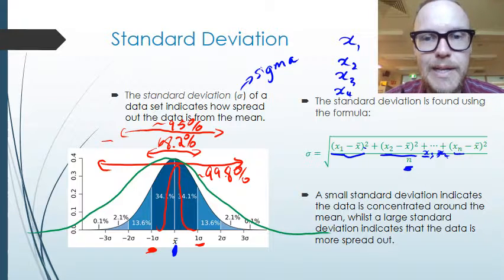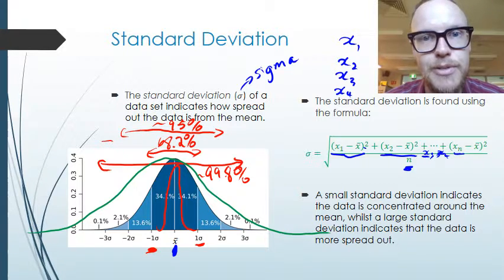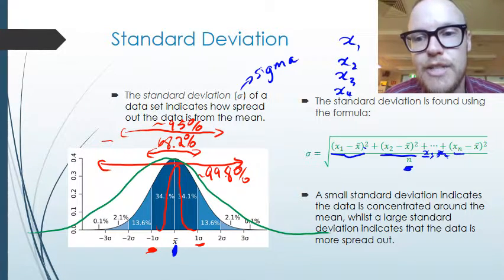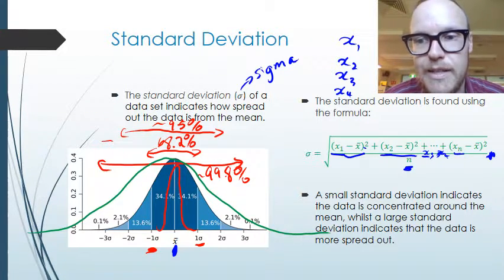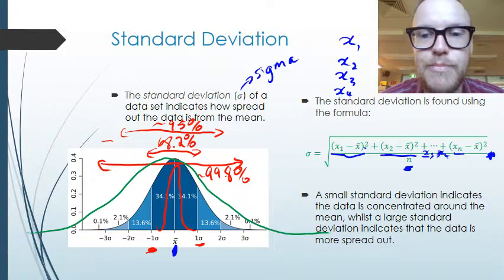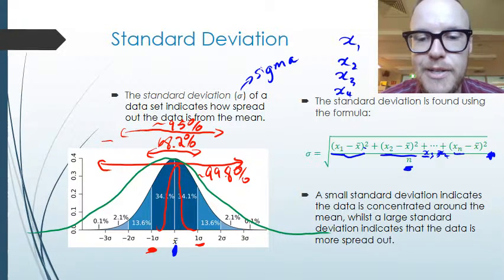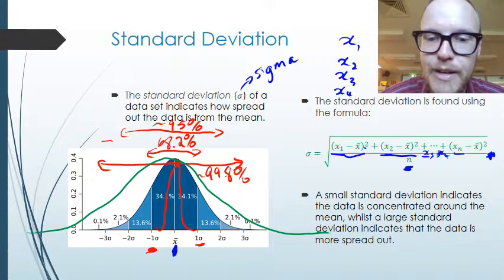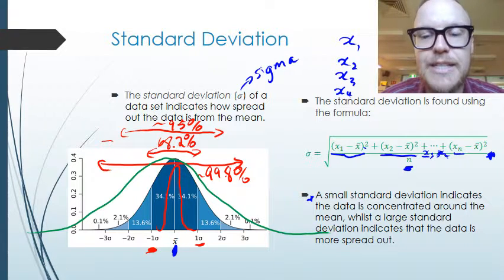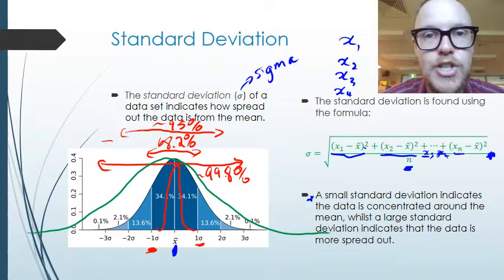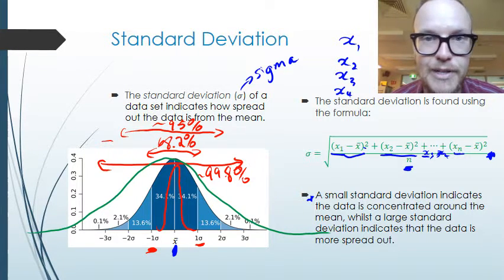I'll show you in class exactly how to use your calculators to do this more easily, but you need to know and practice this formula. A small standard deviation indicates the data is concentrated around the mean, whilst a large standard deviation means the data is much more spread out.